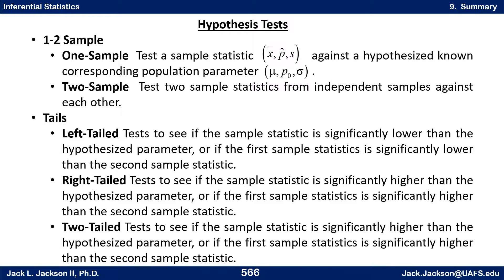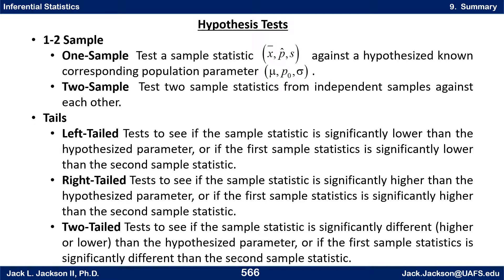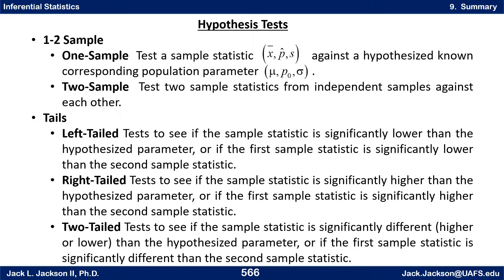Two-tailed tests test to see if the sample statistic is significantly different than the hypothesized parameter — either higher or lower — or if the first sample statistic is significantly different than the second sample statistic. When deciding what to do on a hypothesis test, you need to decide if it's one or two sample, and if it's left, right, or two-tailed. Look for keywords like 'less than,' 'smaller than,' or 'claim was inflated' for a left-tailed test.